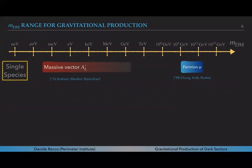In that case the mass of the fermion has to be close to the inflationary scale and in any case not below something like 10 to the 10 GeV.